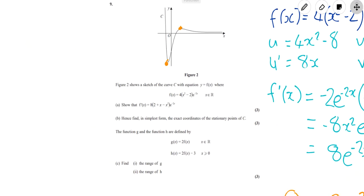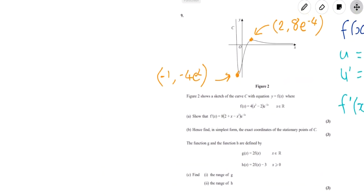What I might do, actually, is put on those coordinates because they're useful for the next part of the question. So that is the minus 1 minus 4 e squared. And that one is the maximum, where they're both positive, is 2 and 8 e to the minus 4. That is useful when we look at the graph and transformation stuff in part C.